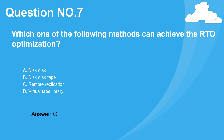Question 7. Which one of the following methods can achieve RTO optimization? A. Disk-to-disk. B. Disk-to-disk-to-tape. C. Remote replication. D. Virtual tape library. Answer: C.